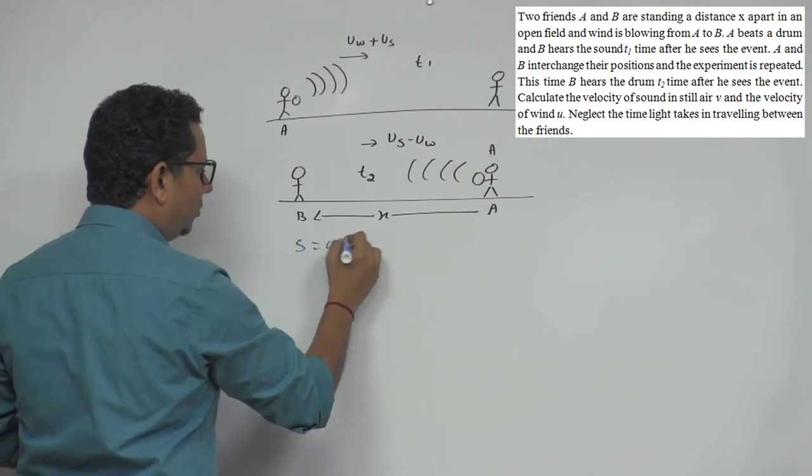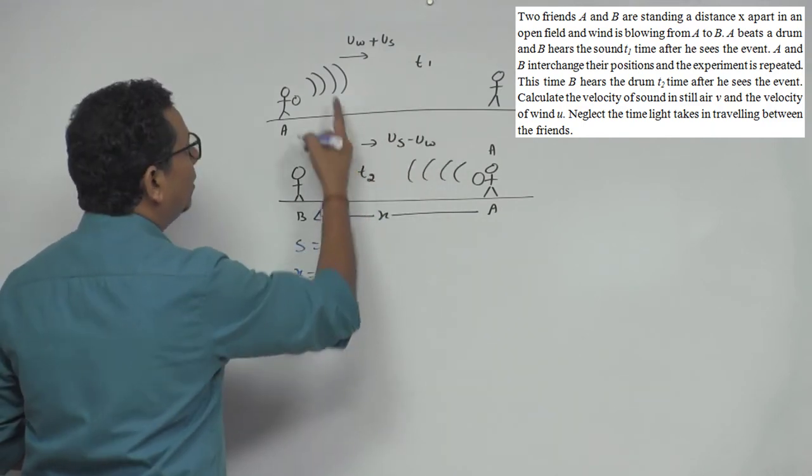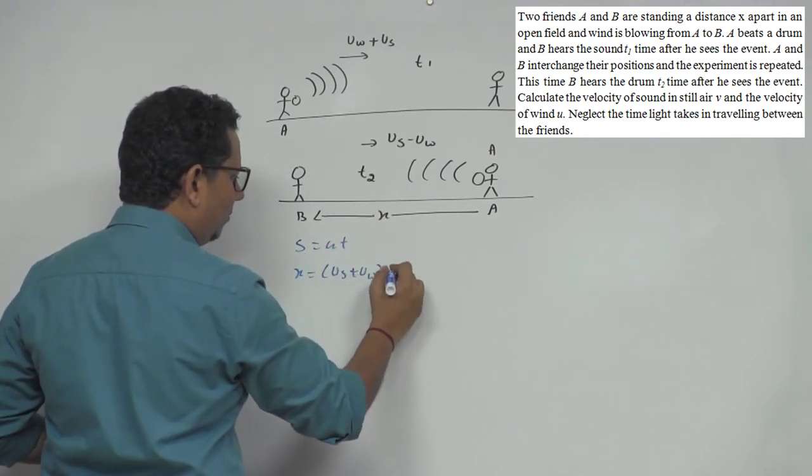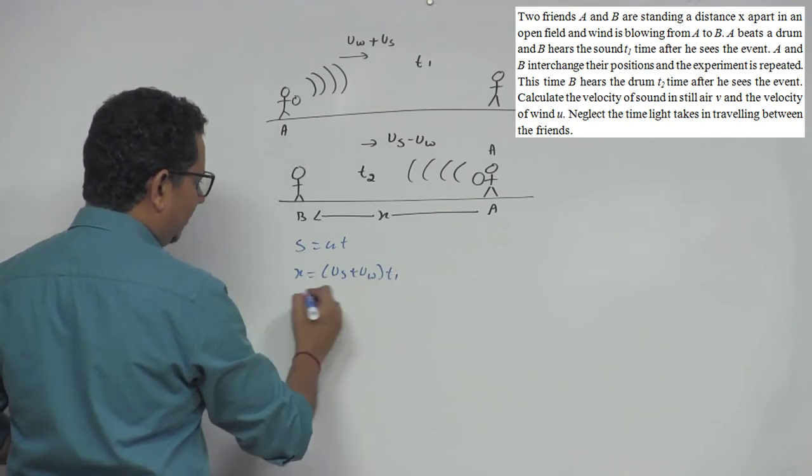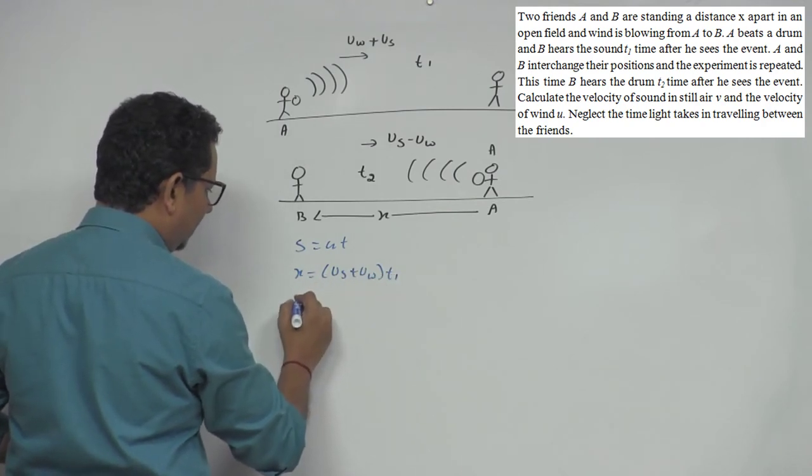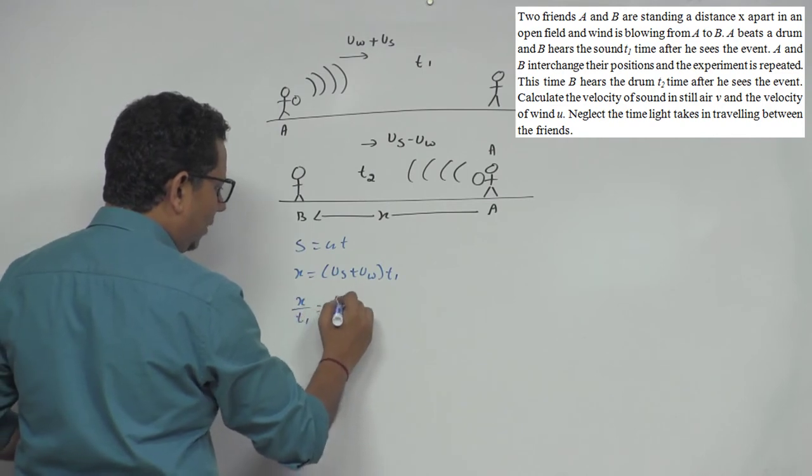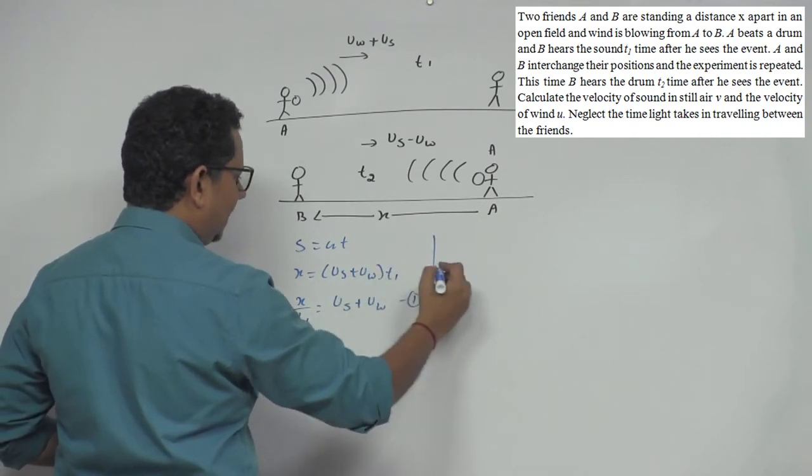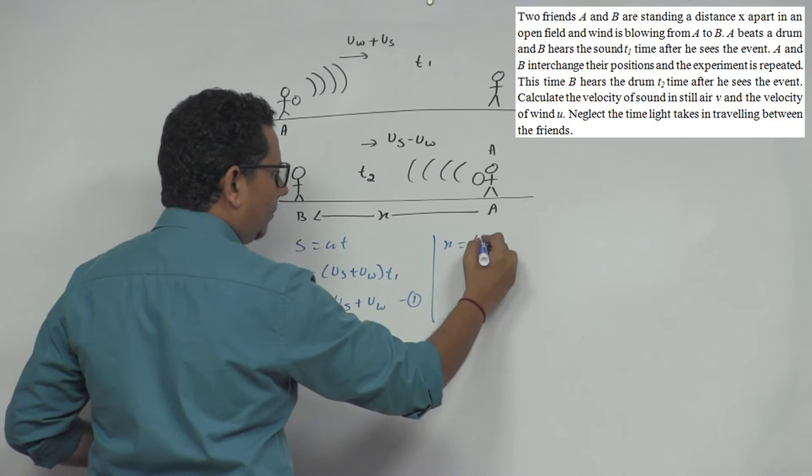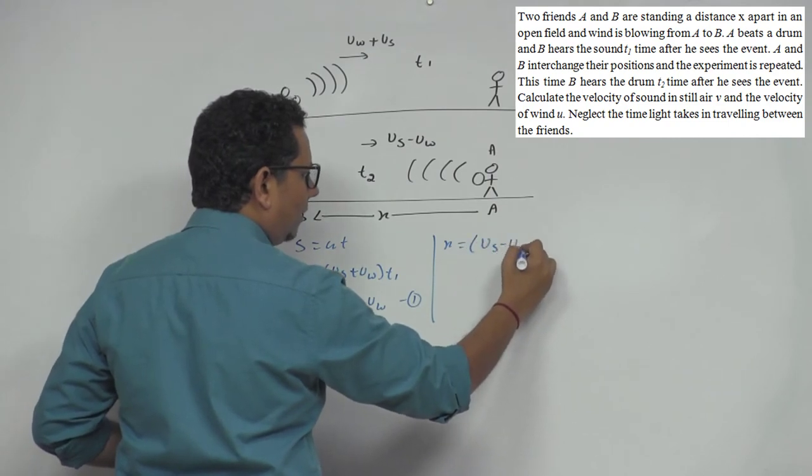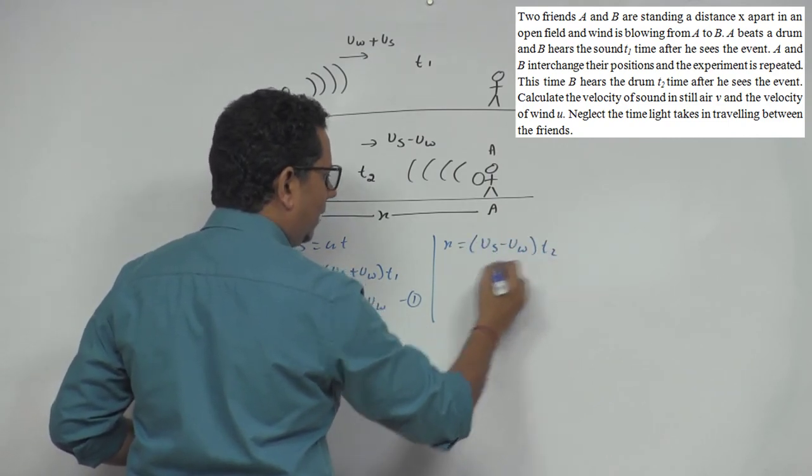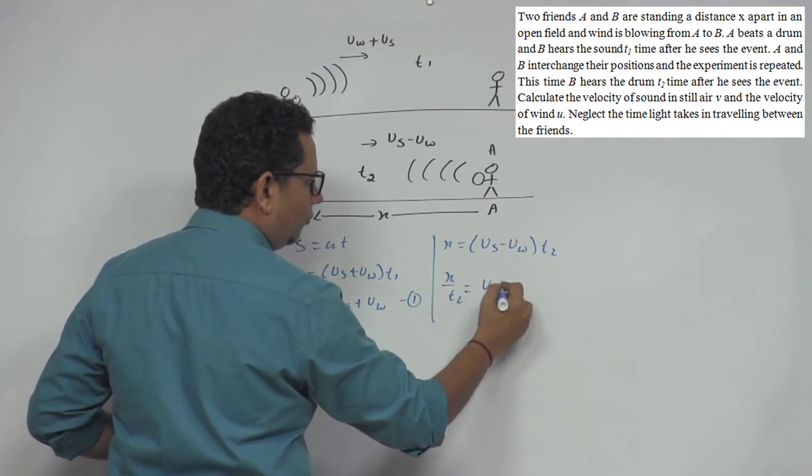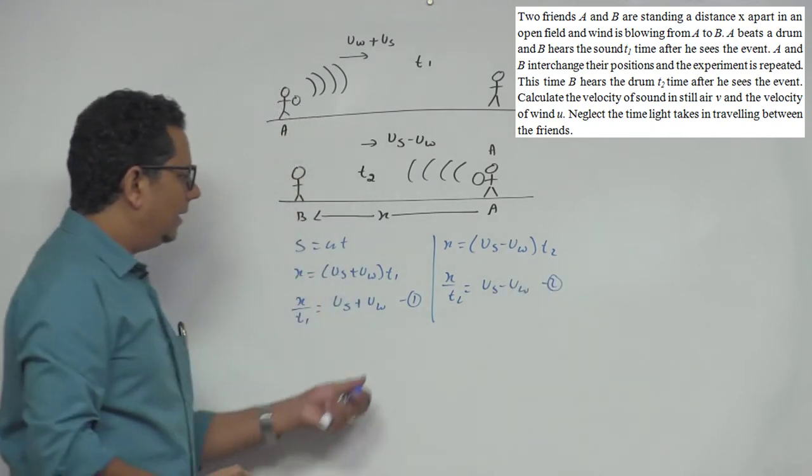X will be equal to velocity of sound plus velocity of wind multiplied by time T1. So X divided by T1 will be equal to VS plus VW, this is the first equation. Similarly, X divided by T2 will be equal to VS minus VW, so this is the second equation.